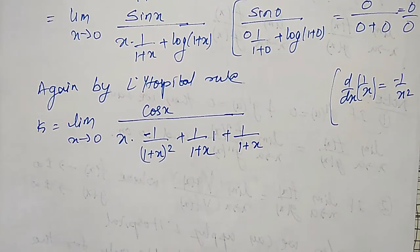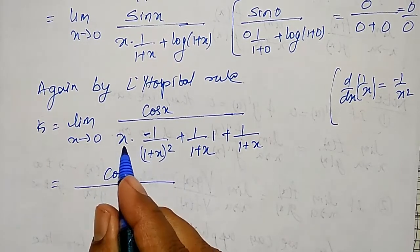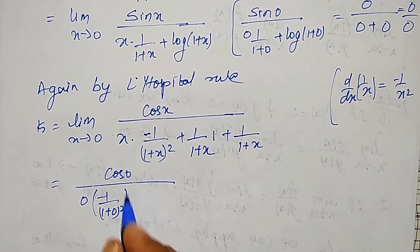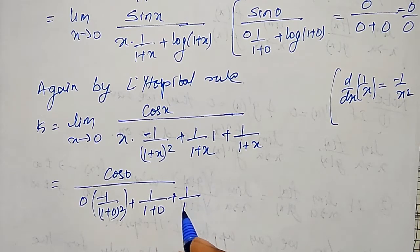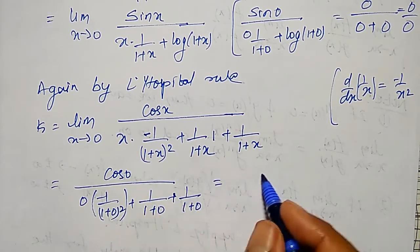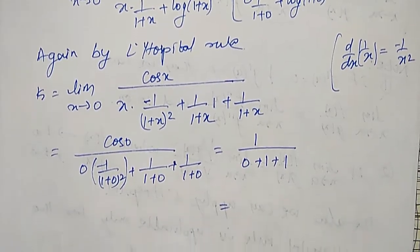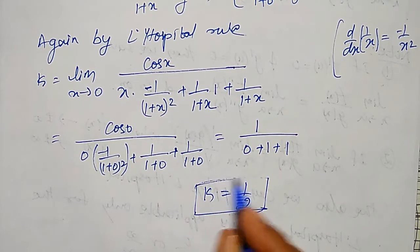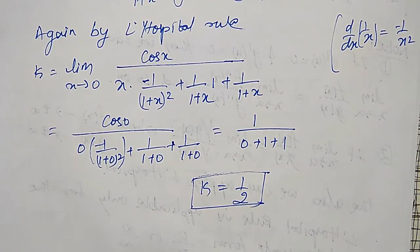Let me check for x equal to 0: cos 0 divided by 0·(−1/(1+0)²) plus 1/(1+0) plus 1/(1+0). cos 0 is 1. The first term in the denominator is 0, and 1/1 plus 1/1 gives 1 plus 1 equals 2. Therefore I get 1 by 2. After getting a finite value, the answer is 1/2.